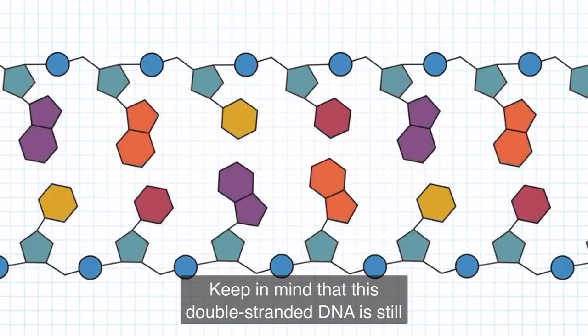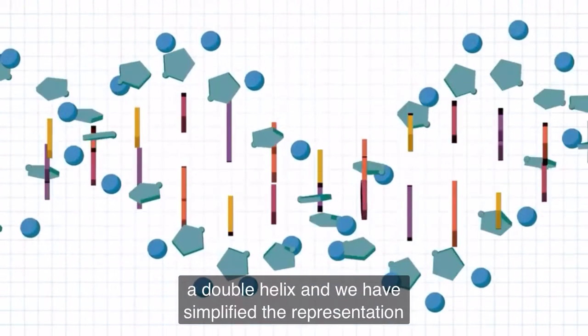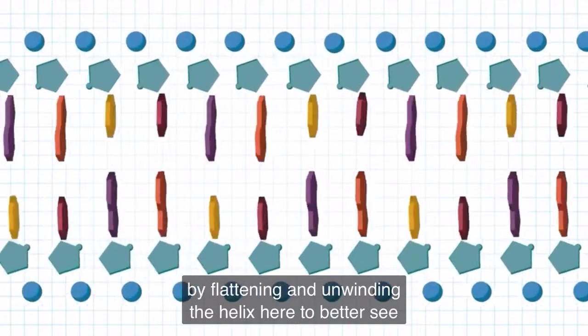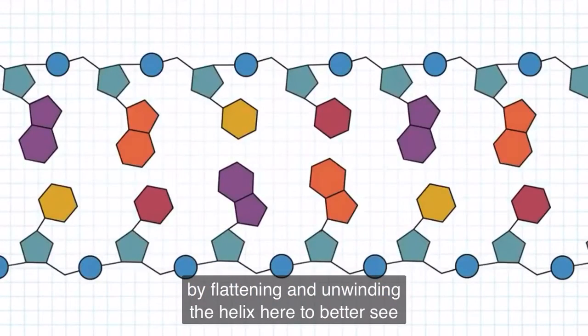Keep in mind that this double-stranded DNA is still a double helix and we have simplified the representation by flattening and unwinding the helix here to better see the atomic structure.